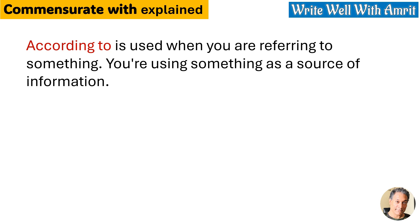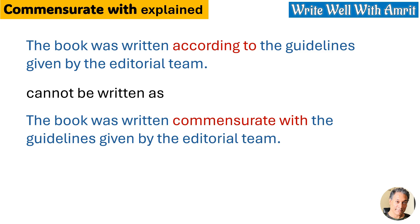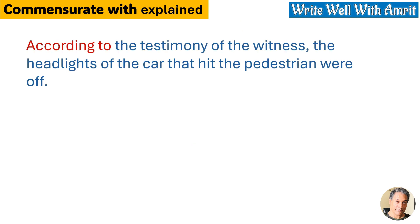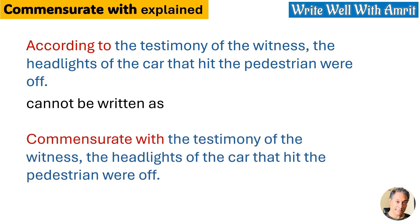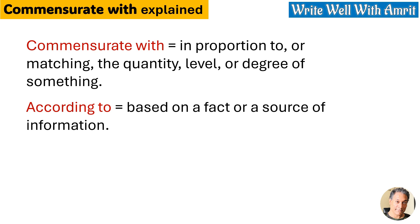'According to' is used when you are referring to something as a source of information. For example: 'According to this book...' or 'The book was written according to the guidelines given by the editorial team.' It cannot be written as 'the book was written commensurate with the guidelines by the editorial team.' Similarly, 'according to the testimony of the witness, the headlights of the car that hit the pedestrian were off' cannot be rewritten using 'commensurate with.' Commensurate with means 'in proportion to' or 'matching the quantity, level, or degree of something,' while 'according to' means 'based on a fact or a source of information.'